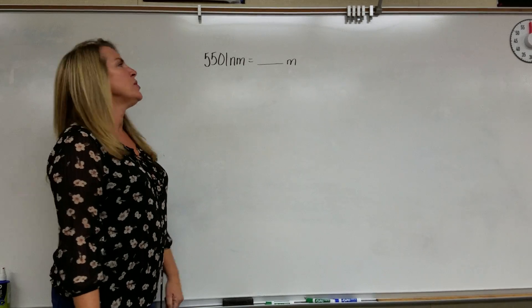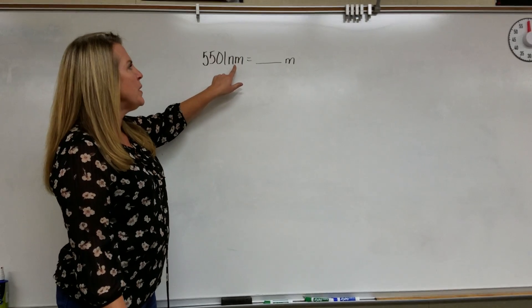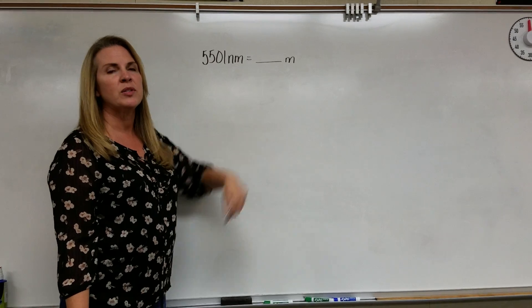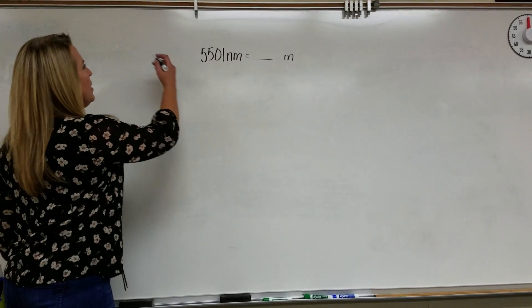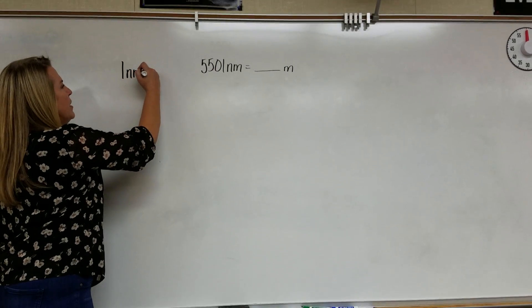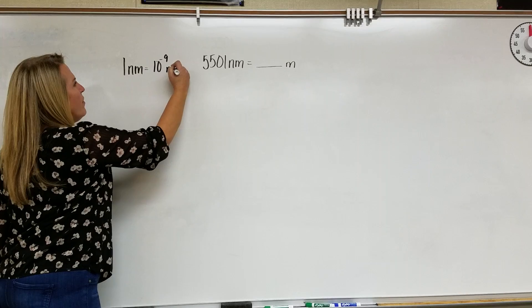One of the things that you want to do is to determine is there a relationship between nanometers and meters? The answer should be yes. Using your metric reference sheet, you should be able to derive that one nanometer is equal to one one billionth of a meter.